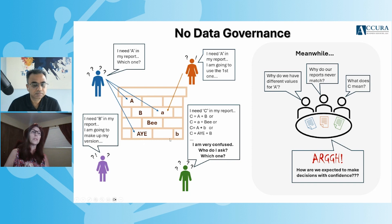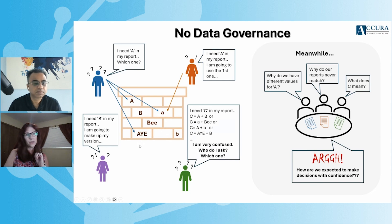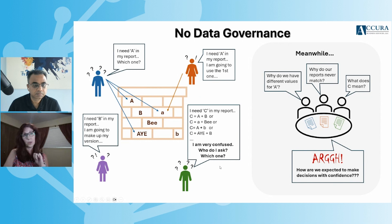So when we go up to that wall to get data, every time we need data, we've got big A, little a, and then A, like A, maybe. Which A do we get? Who do I ask a question to? So if I need C and C is A plus B, is it A plus B or A plus B or A plus B or A plus B? And how do I make that determination? I'm very confused.